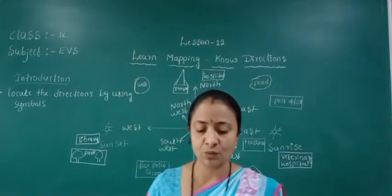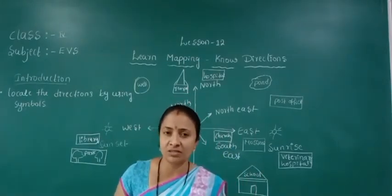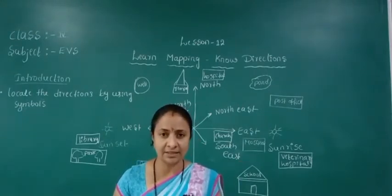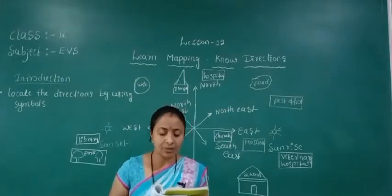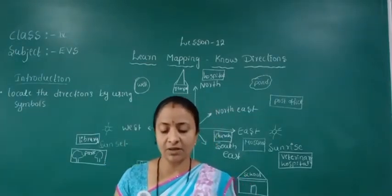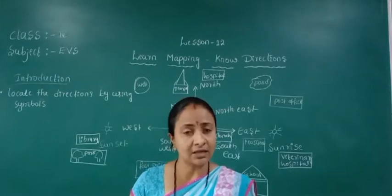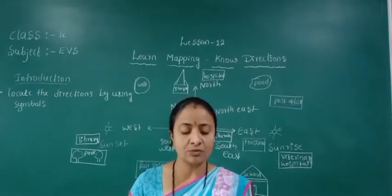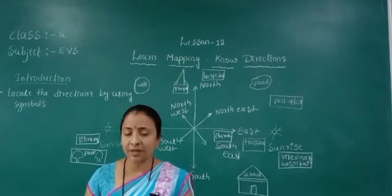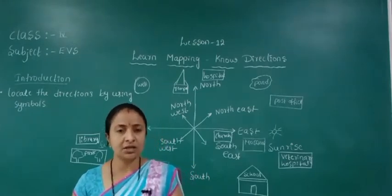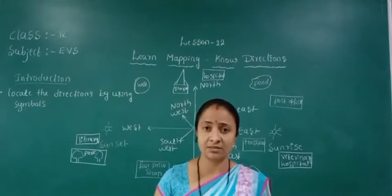Write the things around your school according to the directions — east, west, south, north — fill in the blanks. Observe the map of Karnataka and write the directions of the places. Arabian Sea is in the west, Andhra Pradesh in the east, Maharashtra in the north, and Kerala in the south.